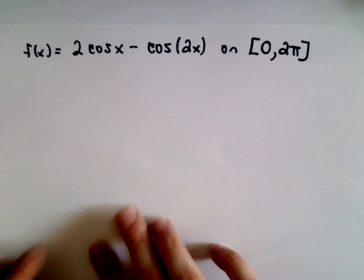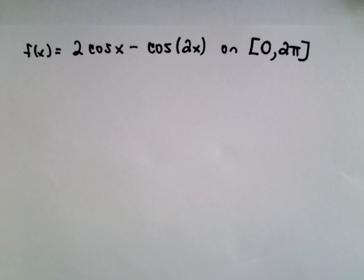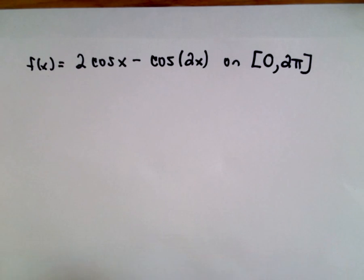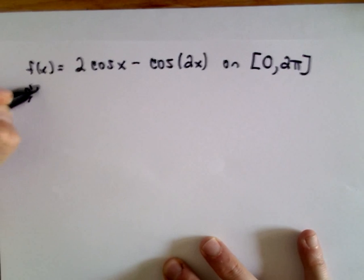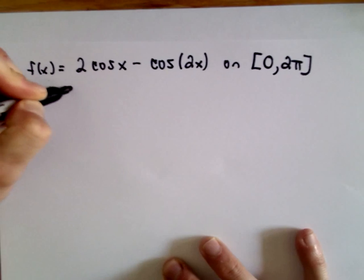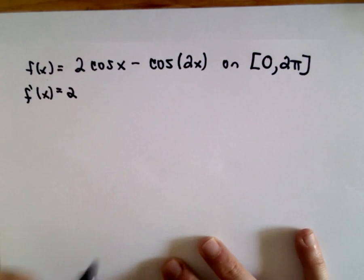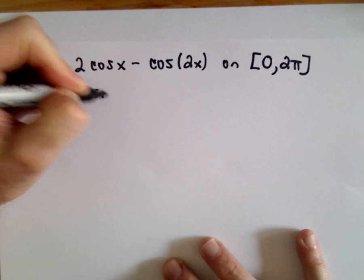So here we have the function 2 times cosine x minus cosine of the quantity 2x, and we're going to do this on the interval 0 to 2pi. The first thing we have to do is to find the derivative. Recall that the derivative of cosine of x is negative sine x.